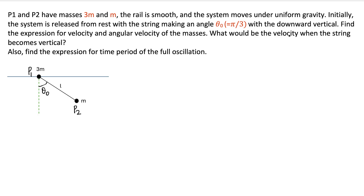There are two masses, p1 and p2, of 3m and m each. The 3m mass is on a smooth rail, which means there is no friction, so this mass can slide freely. Right now we are holding mass m in a position where it makes an angle theta zero with the vertical. We can use pi by 3 later to compute some values. We release the mass at time t equal to zero, and we need to compute the velocities of the two masses and the angular velocity of mass m at any given point or time t. We also need to calculate the expression for the time period of full oscillation.